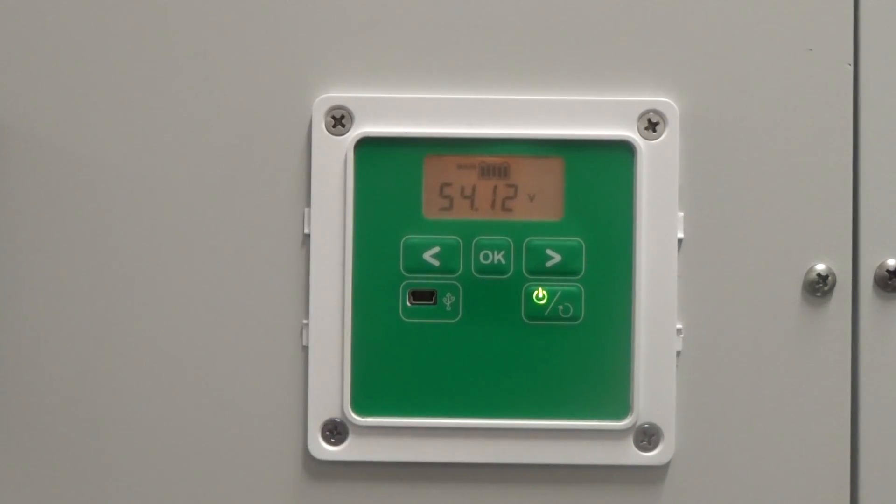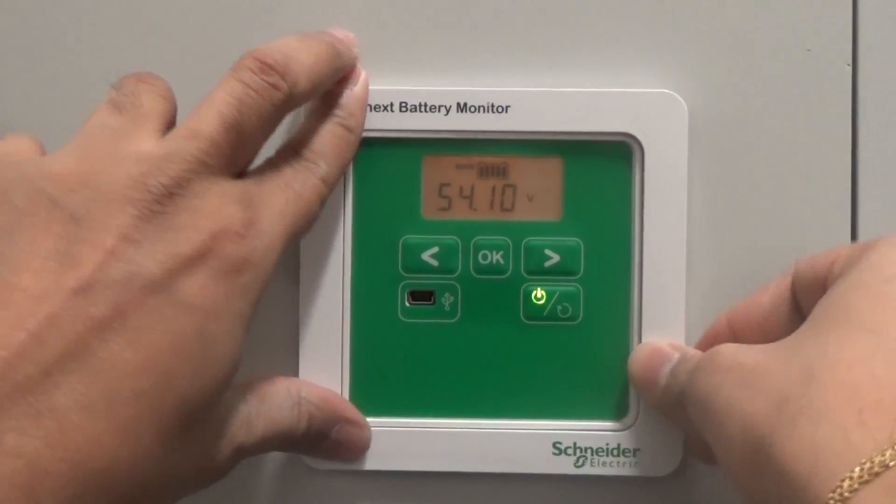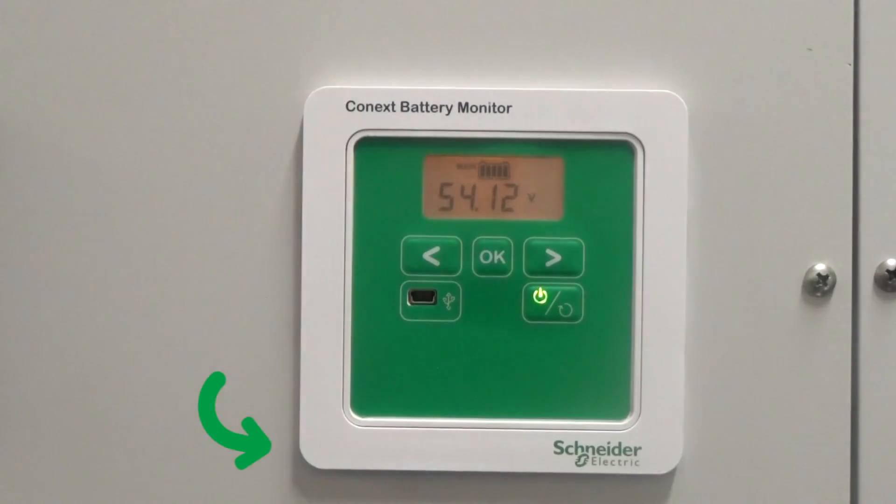If the battery monitor is installed in a panel mount where access to the bottom will not be available, do not install the Orange Cat5 cable at this time. It will be connected later.